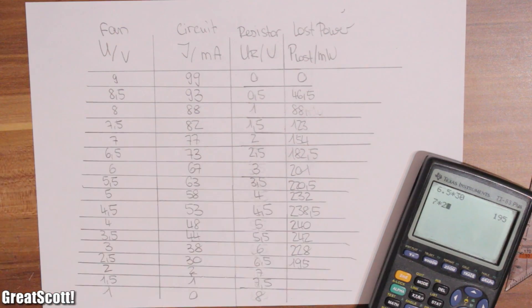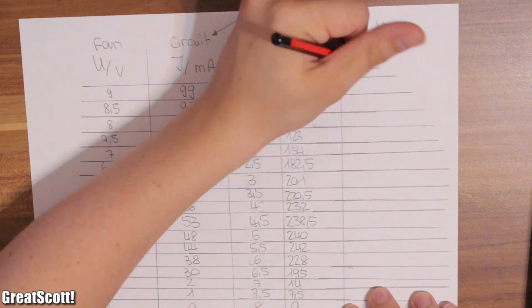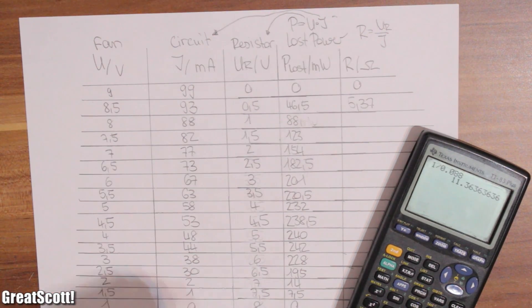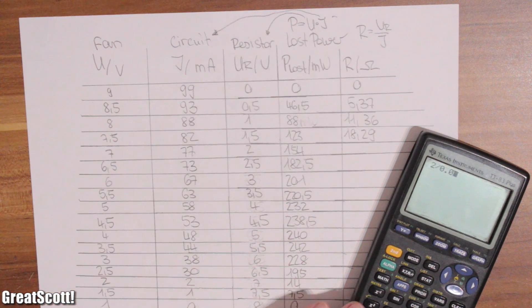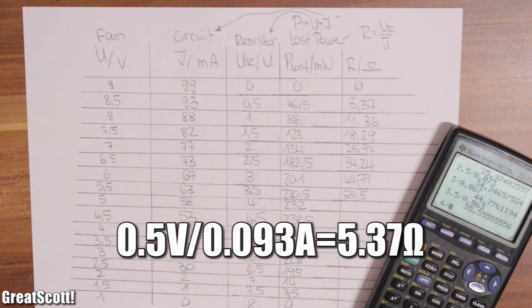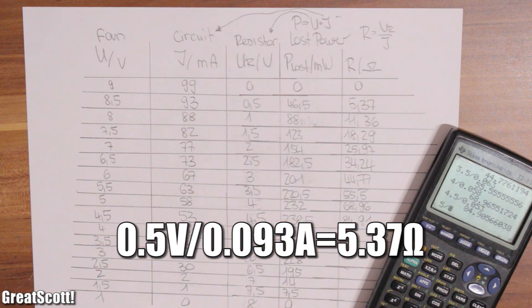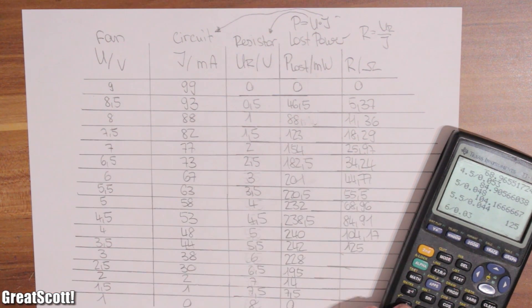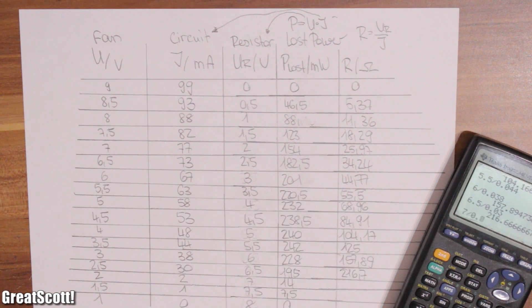Now we can also calculate the resistor values. Resistance equals voltage divided by current. So here we have 0.5 volts divided by 0.093 amps equals 5.37 ohms. And the rest are just other values.